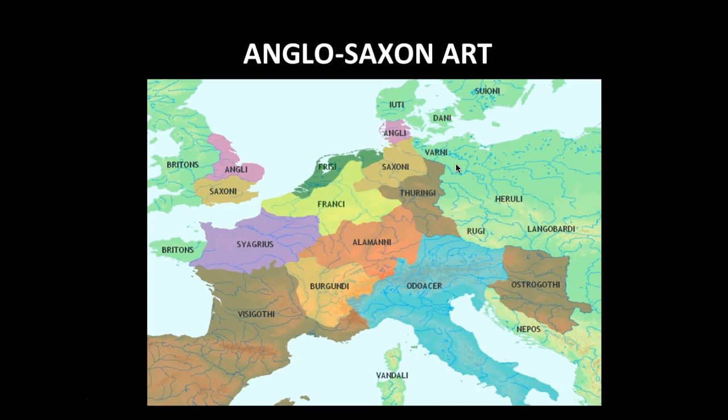One of the hallmarks of Anglo-Saxon art is the use of gold and red materials — lots of gold, lots of red. There's also a lot of interest in filling every available space, so a little horror vacui is happening here too.